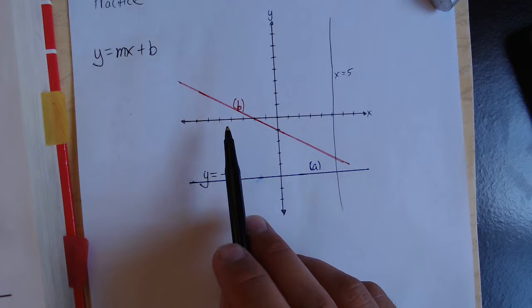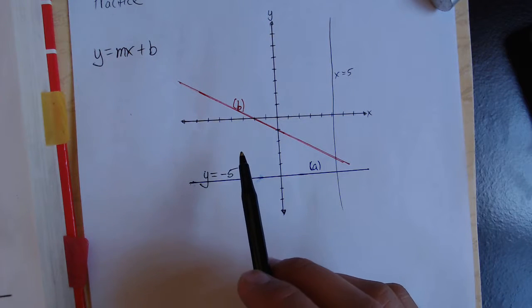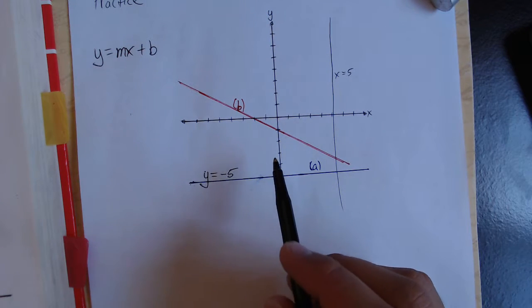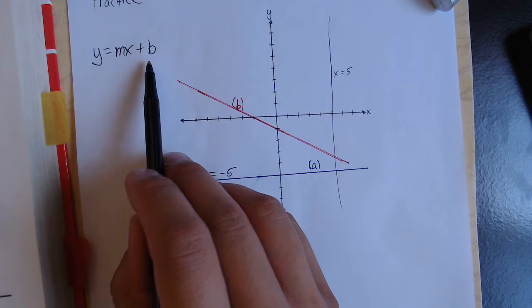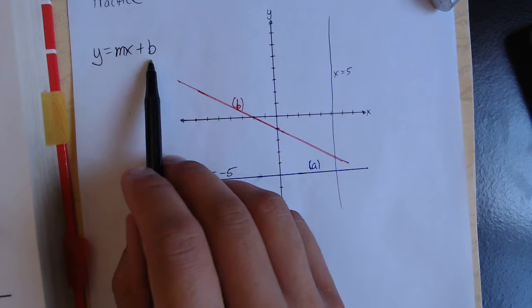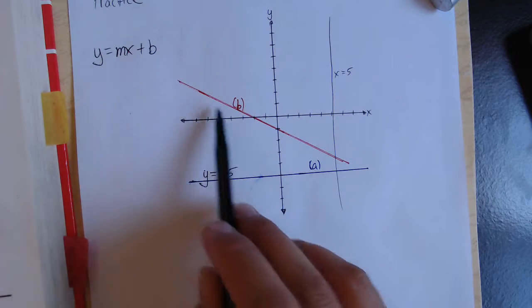Now, moving on to line B where we have an actual slope. The first thing we want to do is find the y-intercept, which is actually the value of b in our equation. If you remember, m is the slope, b is the y-intercept, and x and y are different points on the line.